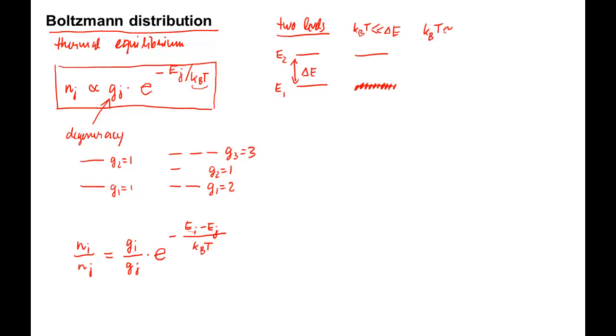If KBT is on the order of delta E, some of the systems will be in an excited state.